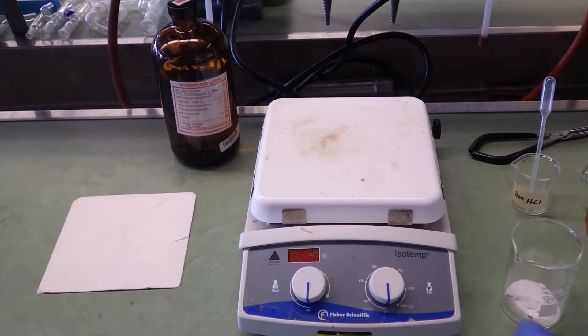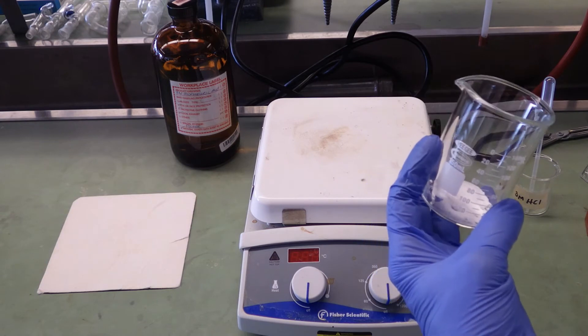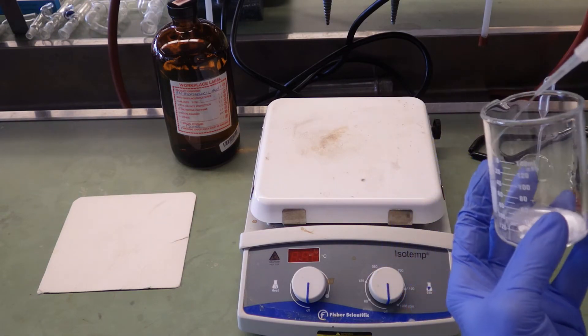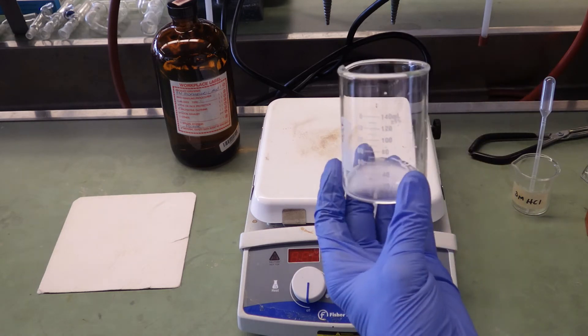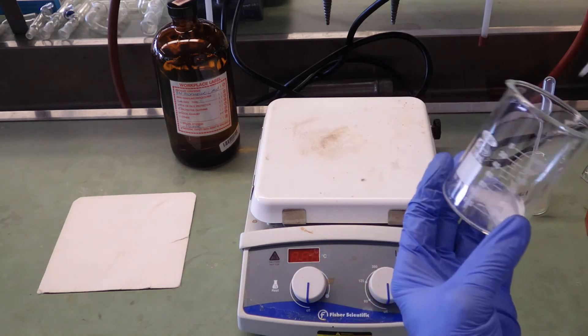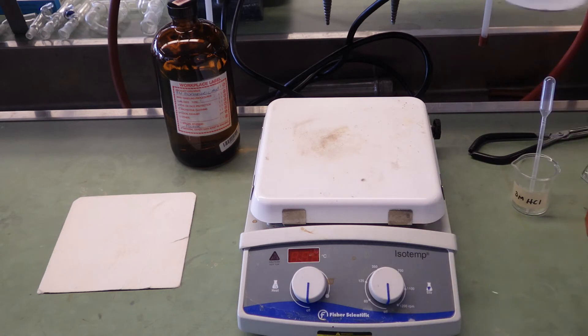I'm going to wet down the sides of the beaker with a stream of distilled water. You don't have to dissolve all the sodium bicarbonate. We'll just have a wet slurry of sodium bicarbonate and water.